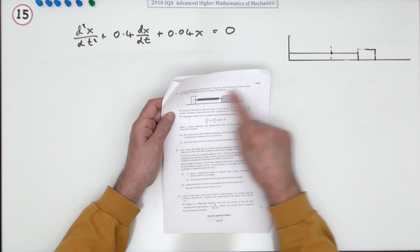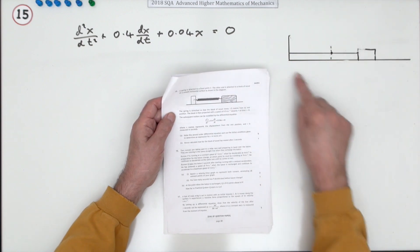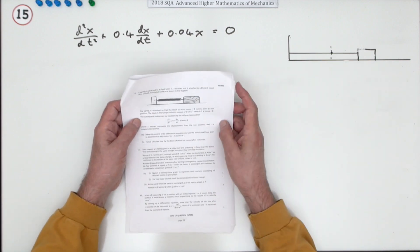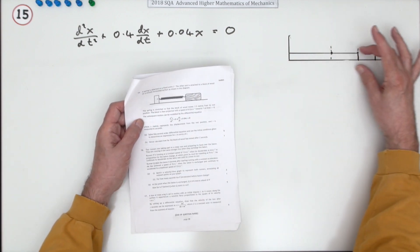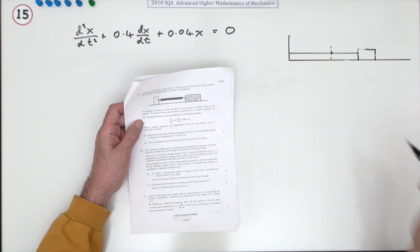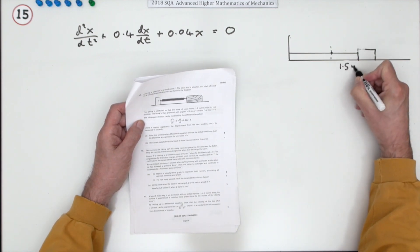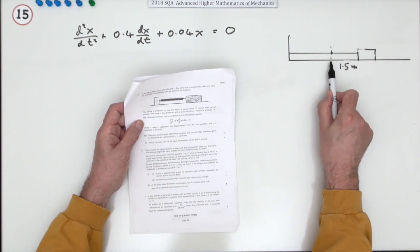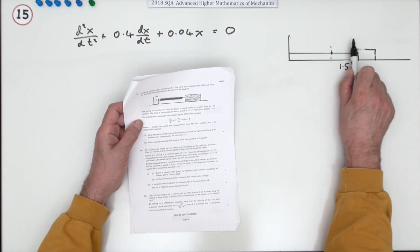The other end is attached to a block of wood on a smooth horizontal surface, so there's no friction here, so it can slide quite freely. The spring is stretched so the block moves what does it say, 1.5 meters from its rest position.